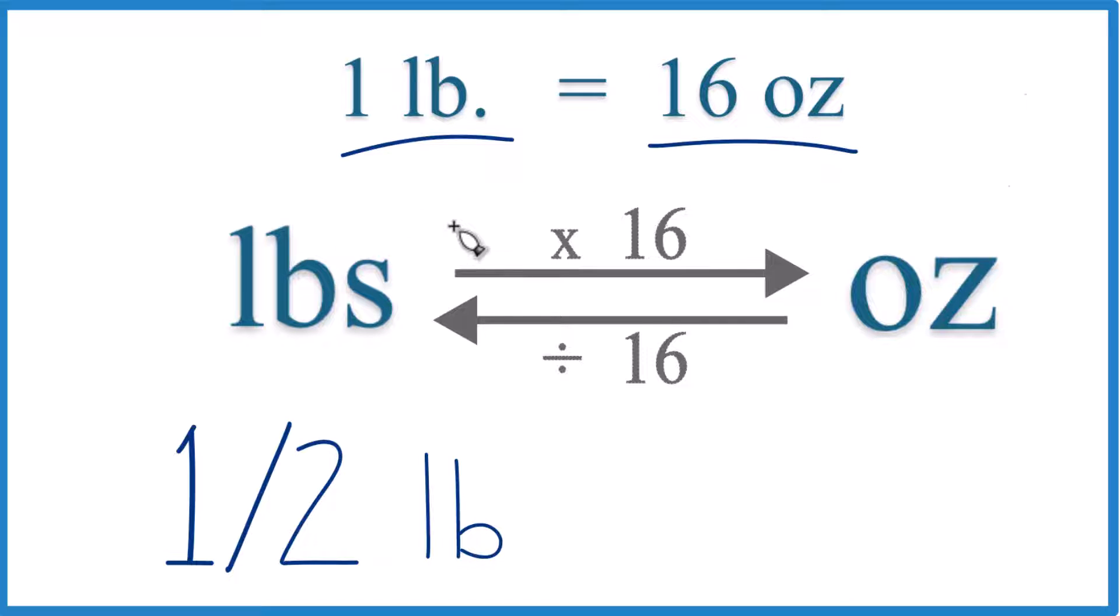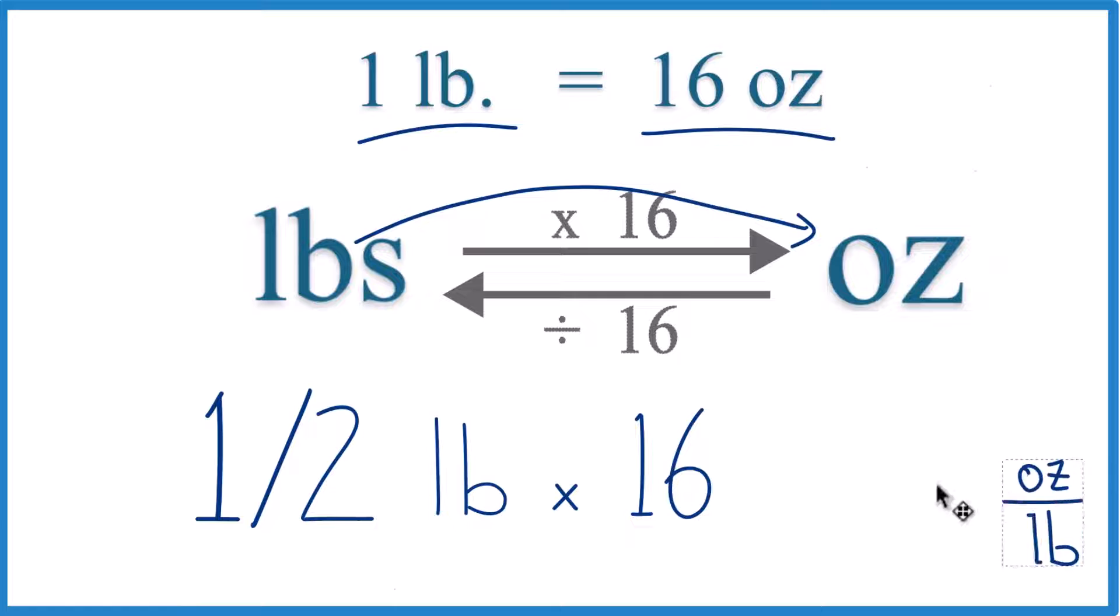And think of it this way. When we go from pounds to ounces, we multiply by 16, like this. And that's 16 ounces in one pound. In one pound, there are 16 ounces.